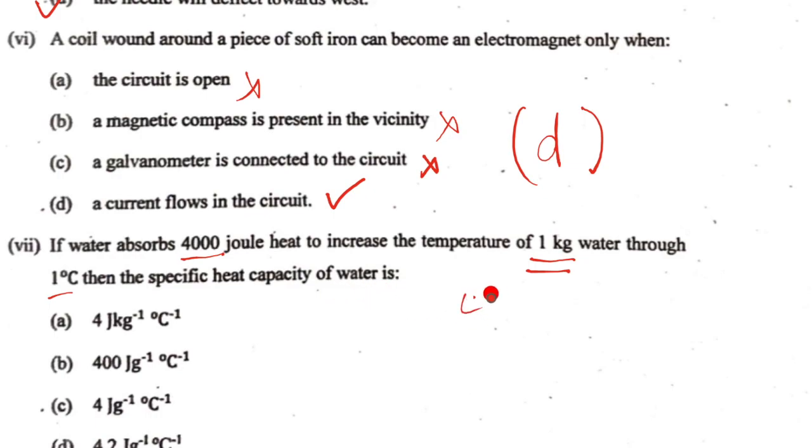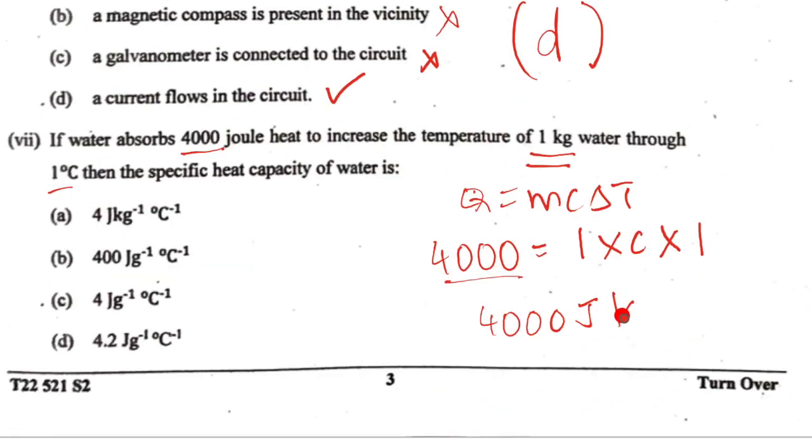Now if you have Q equal to MC delta T, and this is 4000, mass is 1 kg, C is what we have to find out, and this is 1 degree C.